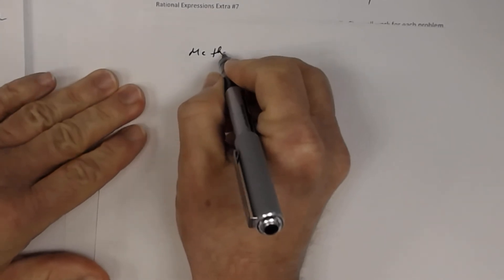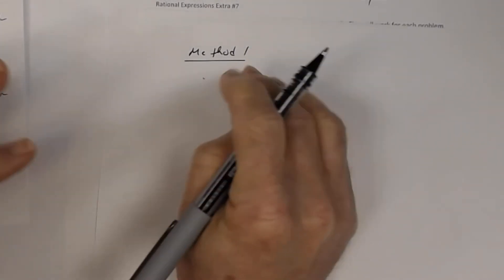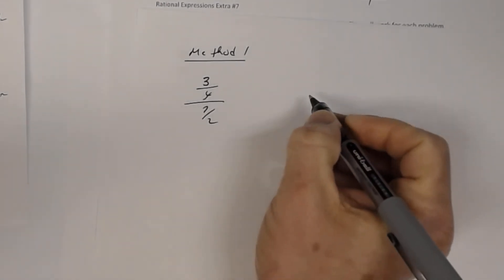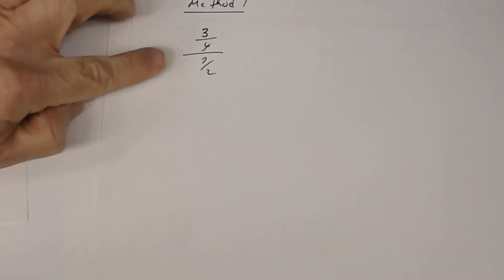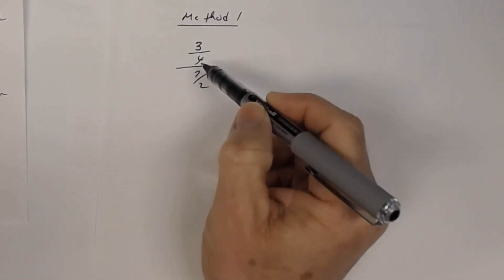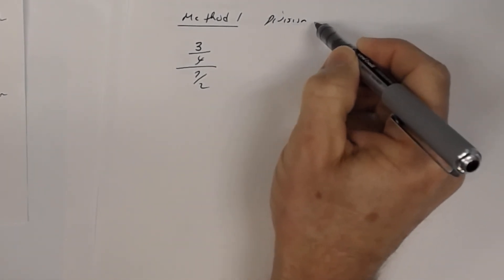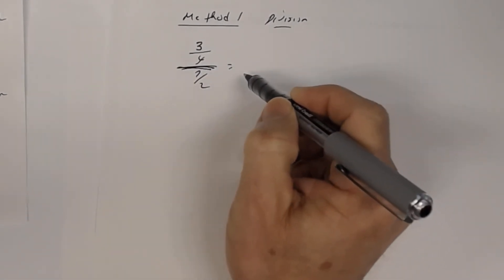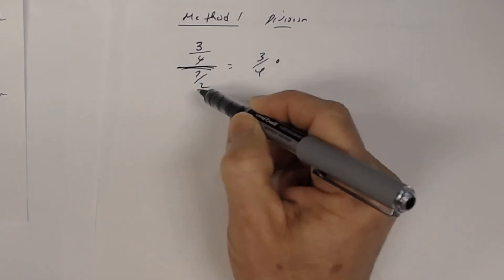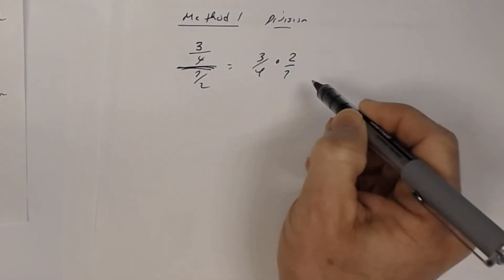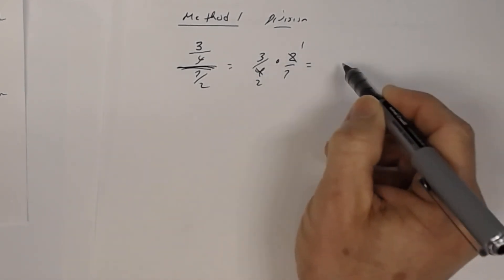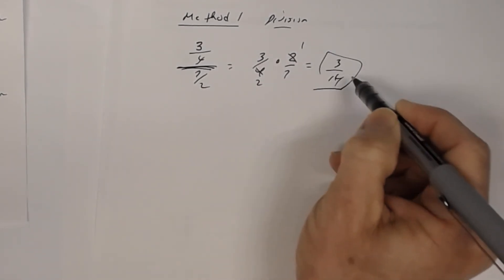In method one, the division method, you rewrite your expressions so you have one fraction divided by another fraction. You have variables involved, but the idea comes from a previous course. Once you have one fraction divided by another, you change the division to multiplication — you take the rational expression in the numerator times the reciprocal of the one in the denominator. The reciprocal of seven-halves is two-sevenths. Then you reduce: two divided by two is one, four divided by two is two, giving you three times one over two times seven, which is three-fourteenths.